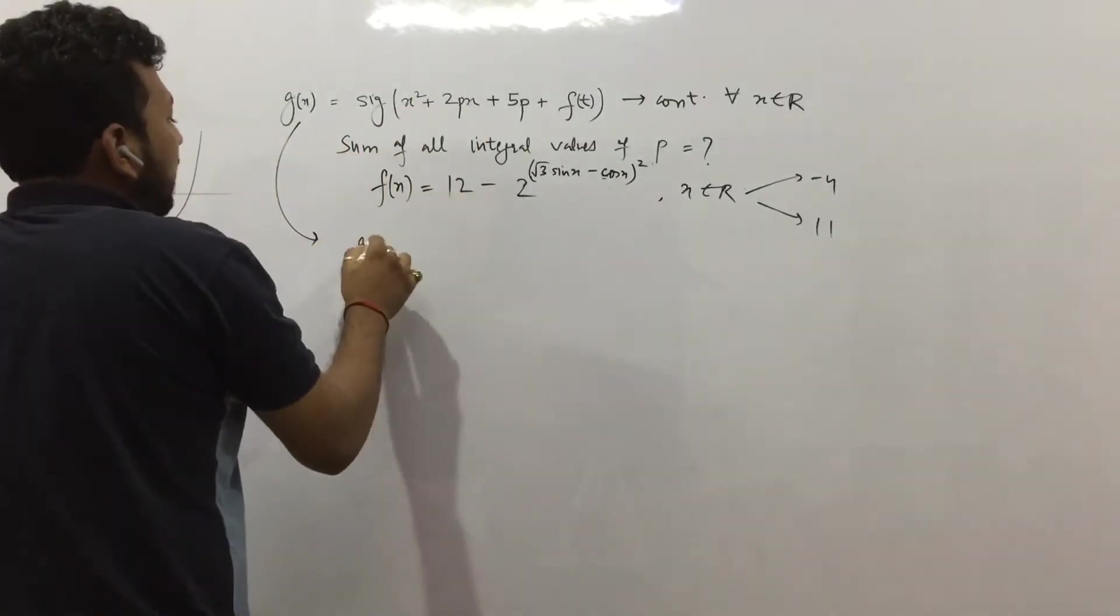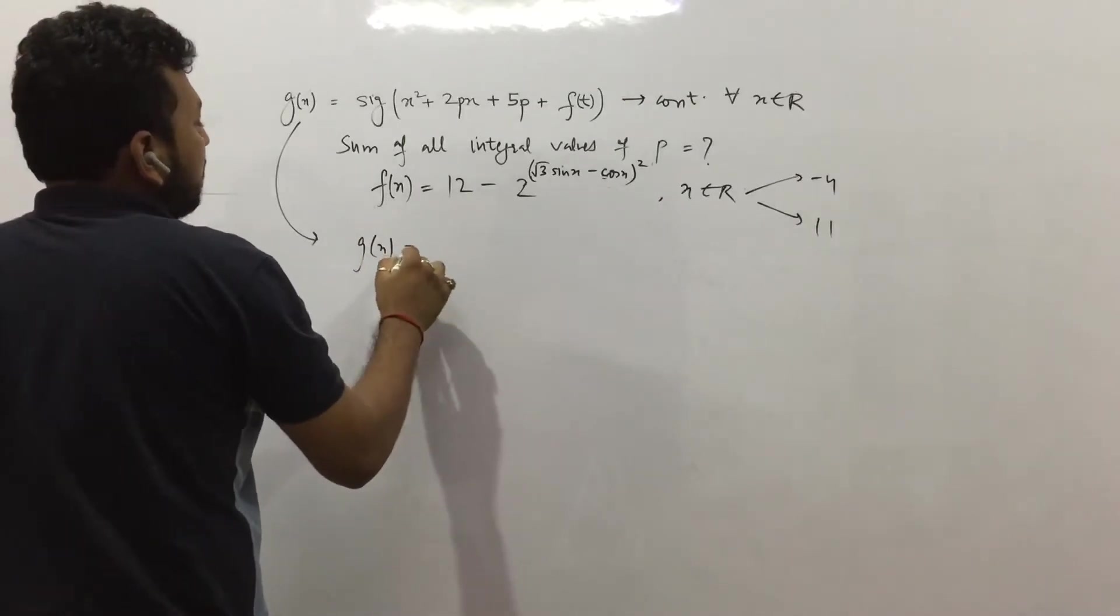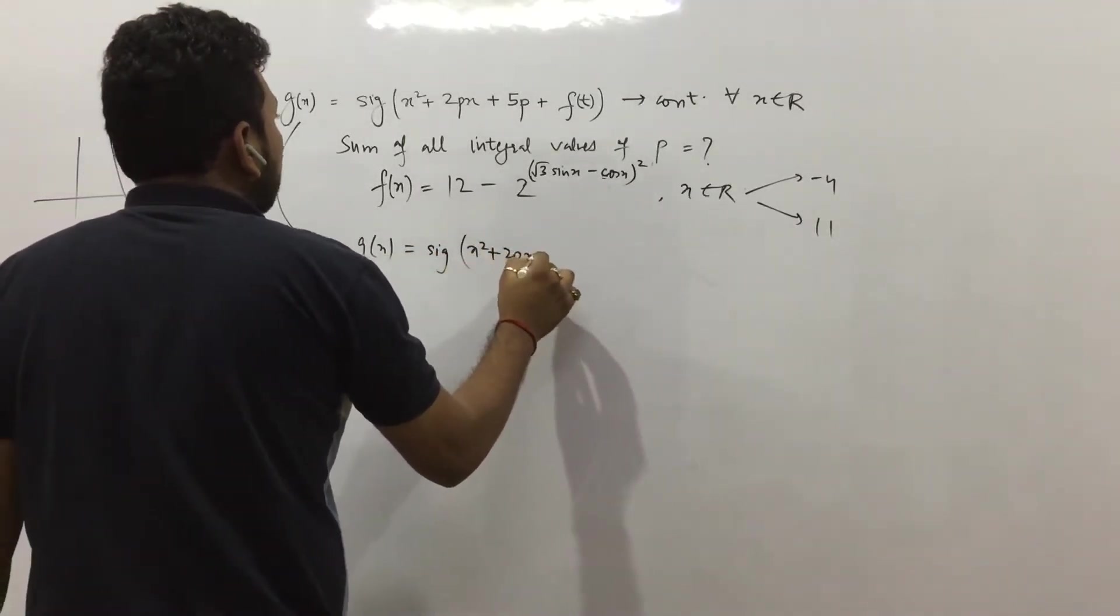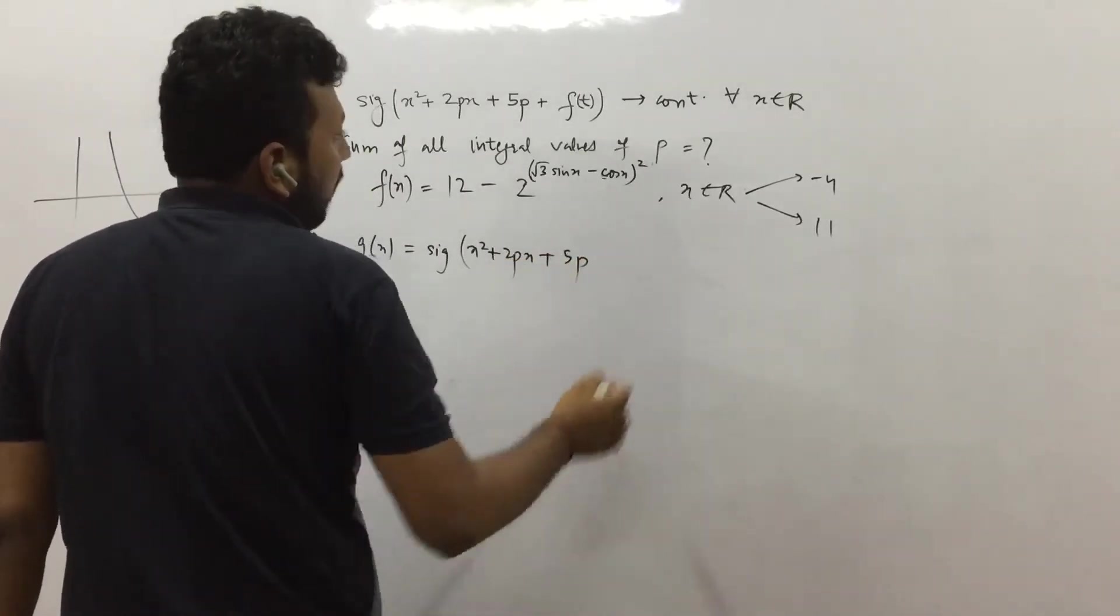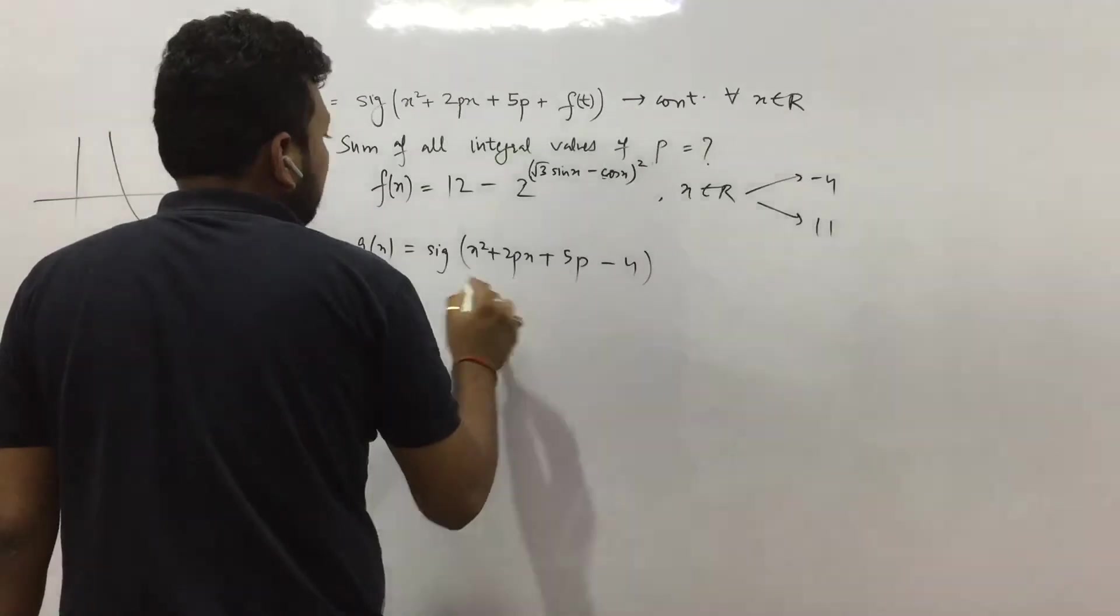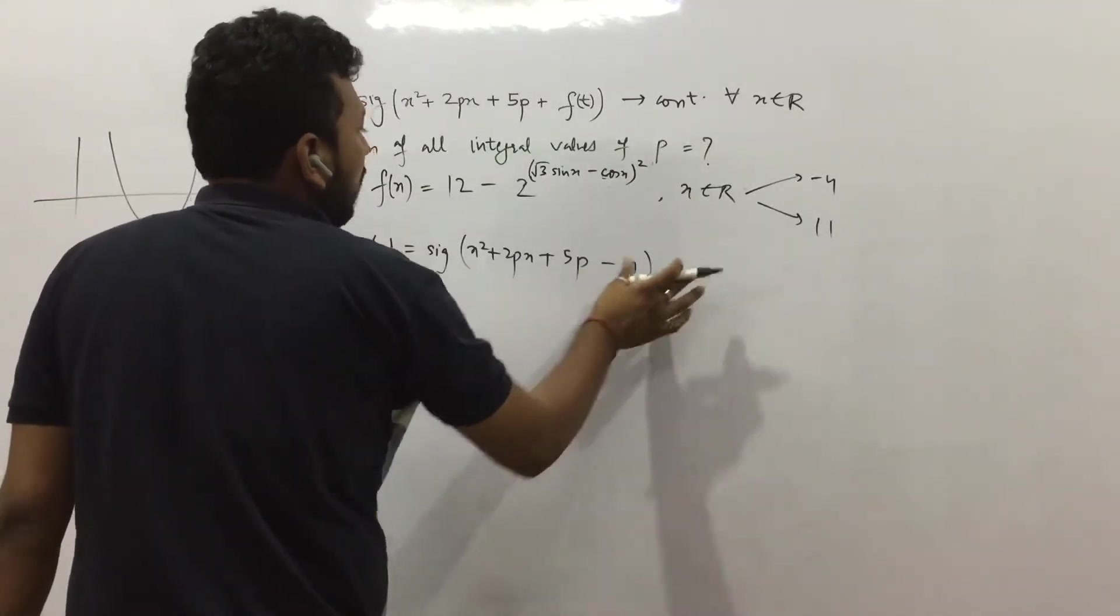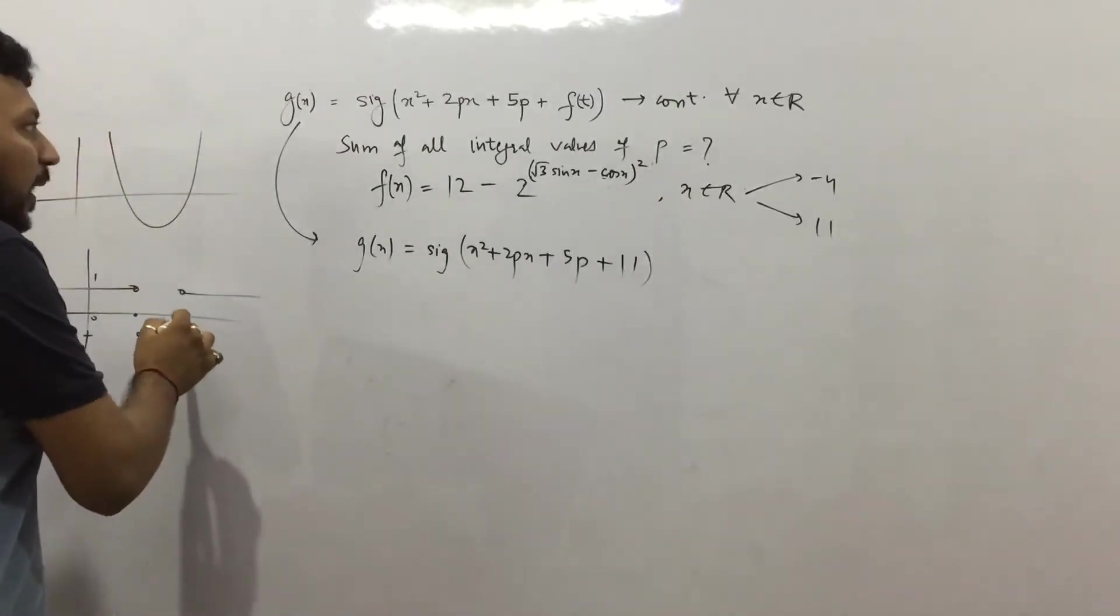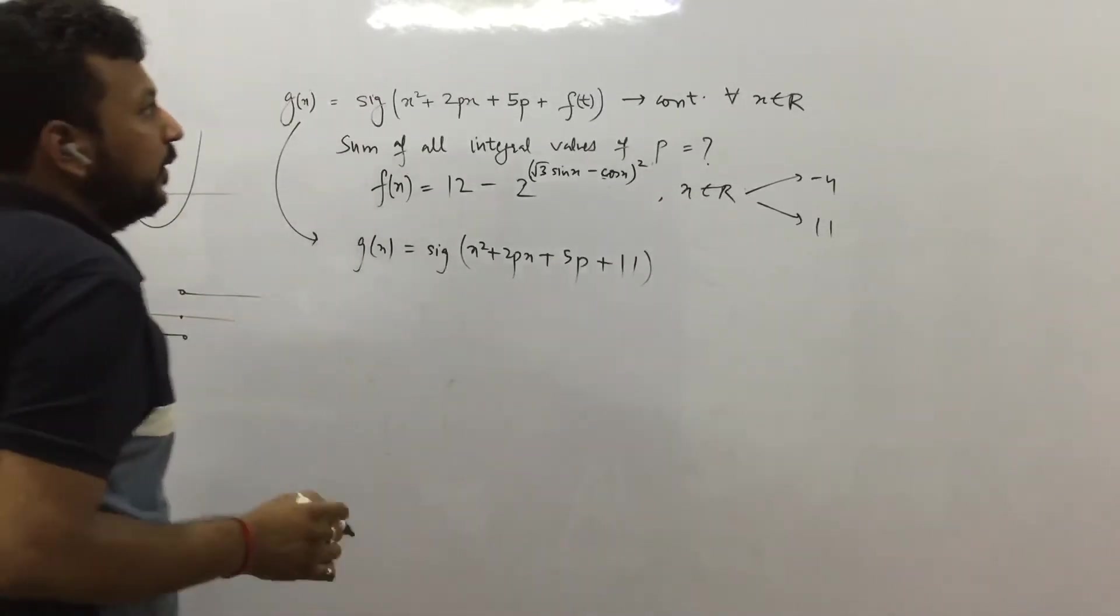So let us understand this now. This g(x) here, we can write it as g(x) = signum(x² + 2px + 5p). Now it can be -4 or +11. Now see, we do not want graph like this because this is not continuous. We want continuity.